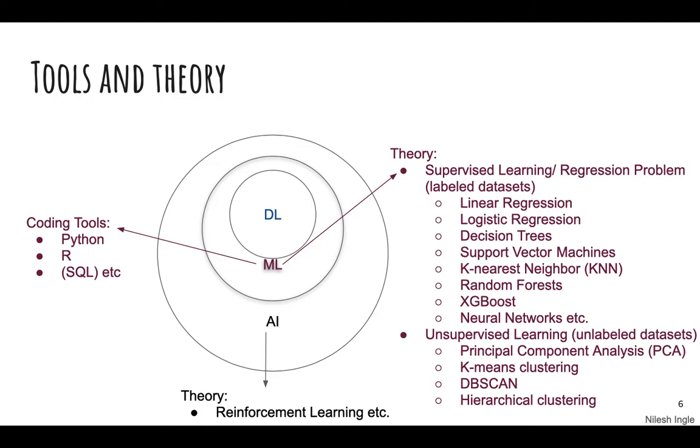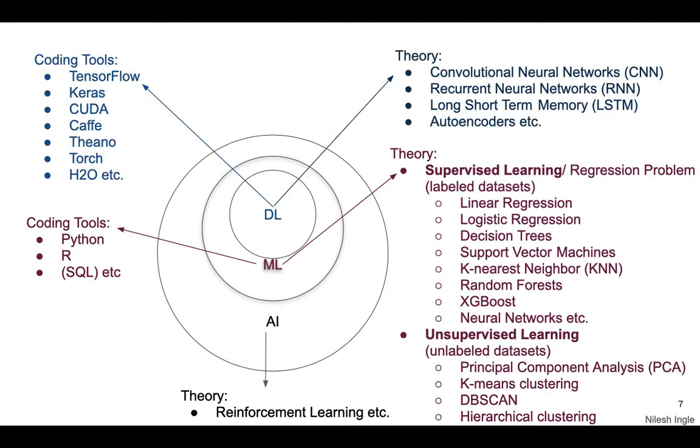Or train the model or get predictions from that. Moving on to deep learning, this is further involved, mostly dealing with neural networks. You have convolutional neural networks (CNN), recurrent neural networks (RNN), long short-term memory (LSTM), auto encoders. The coding tools that are available for this particular area are TensorFlow, Keras, CUDA, Caffe, Theano, Torch, H2O, etc.